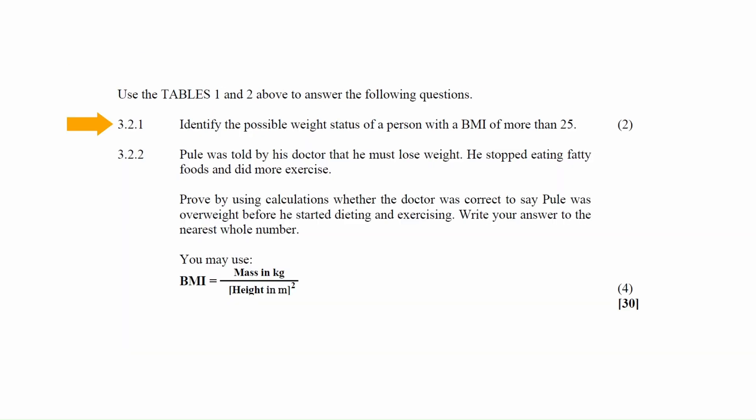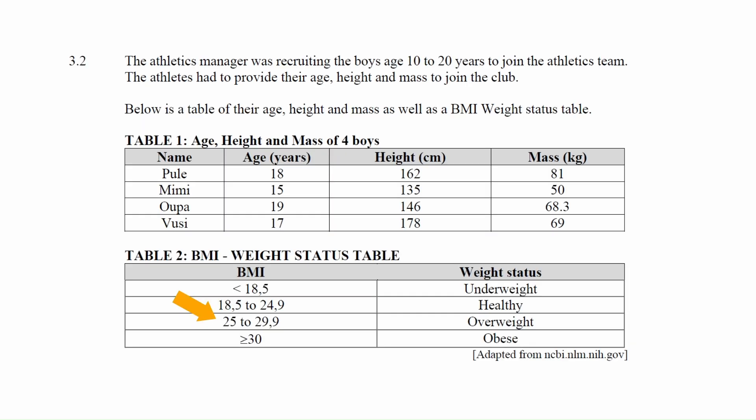In question 3.2.1, identify the possible weight status of a person with a BMI of more than 25. From Table 2, the weight status of a person with a BMI greater than 25 will be overweight or obese.